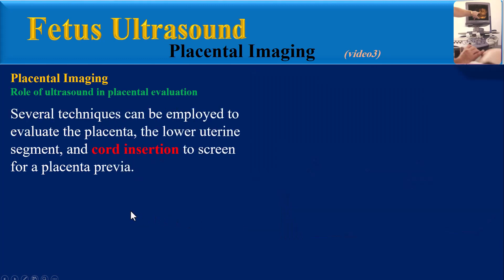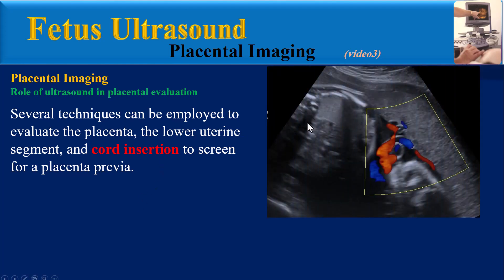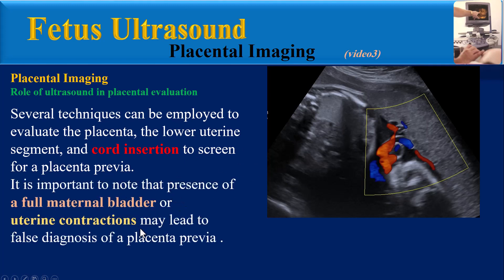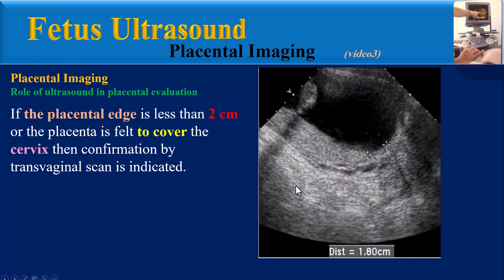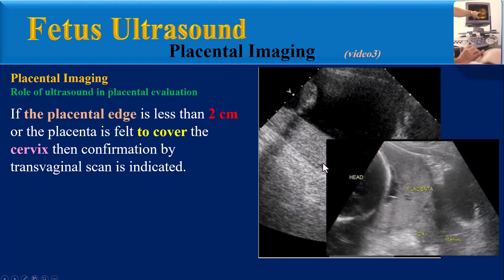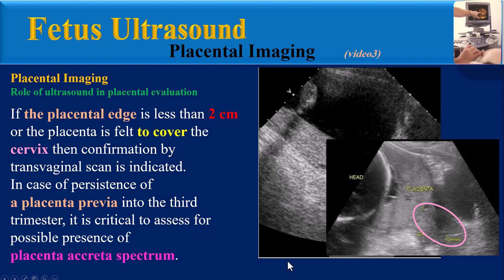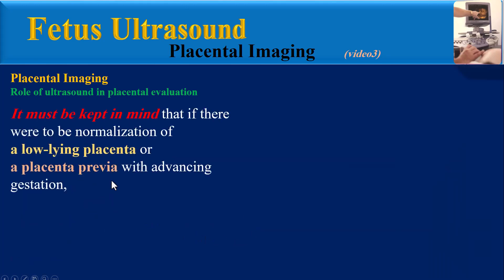Ultrasound plays a critical role in placental localization, whether in a point-of-care setting or during screening examinations. Several techniques can be employed to evaluate the placenta, lower uterine segment, and cord insertion. It is important to note that a full maternal bladder or uterine contractions may lead to false diagnosis of placenta previa. If the placental edge is less than 2 cm from the cervix, or the placenta is felt to cover the cervix, confirmation by transvaginal scan is indicated.